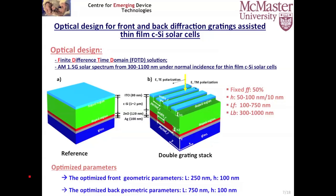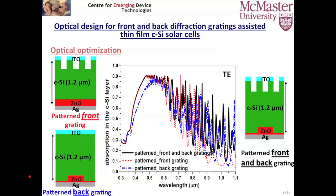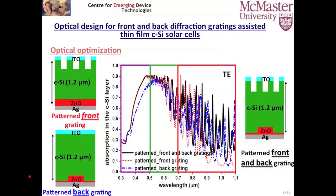The optimized parameters for front and back grating are shown here. I will compare the absorption in the crystalline silicon layer for the double grating structure against stacks with only the front or only the back grating. The TM polarization shows a similar trend as TE polarization, so here I focus on TE polarization to analyze the absorption spectra.